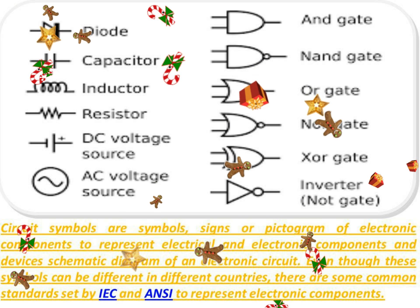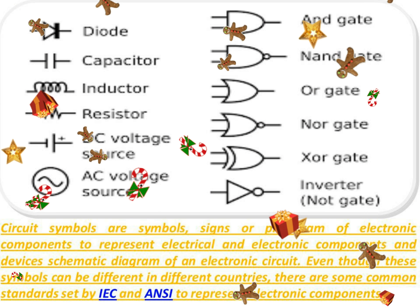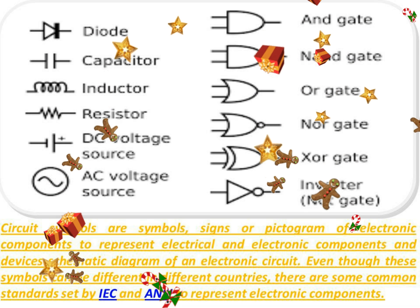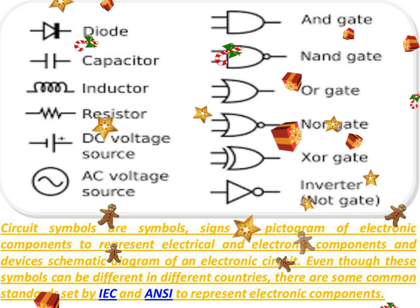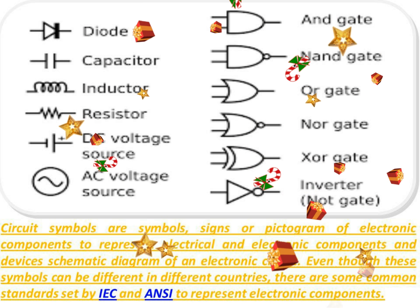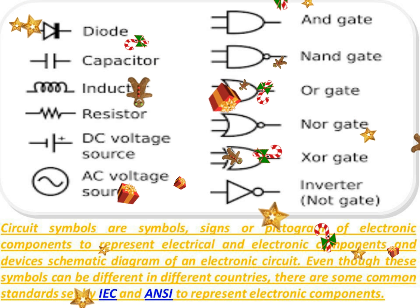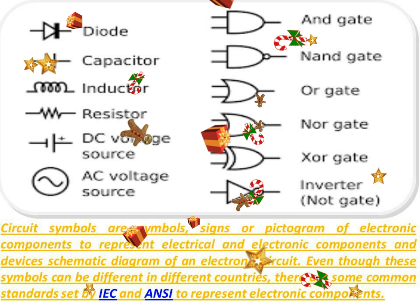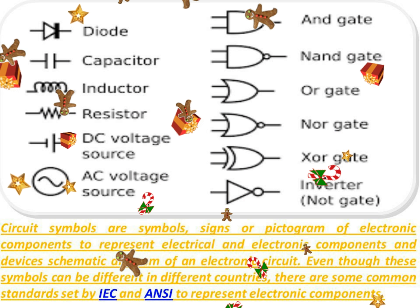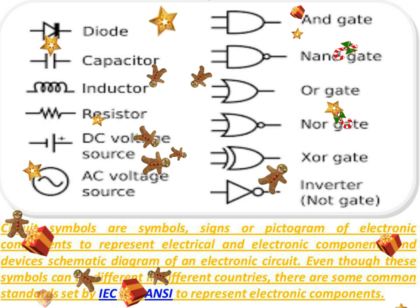Below are circuit symbols of the most common electronic components: DC current circuit symbol, capacitor circuit symbol, coil circuit symbol, crystal circuit symbol, resistor circuit symbol, diode circuit symbol, transistor circuit symbol, fuse circuit symbol, and cell circuit symbol.